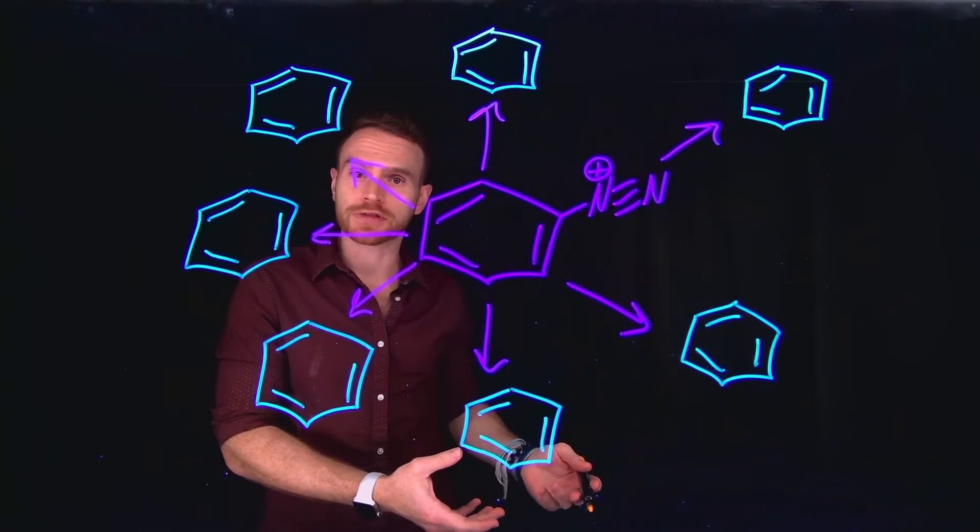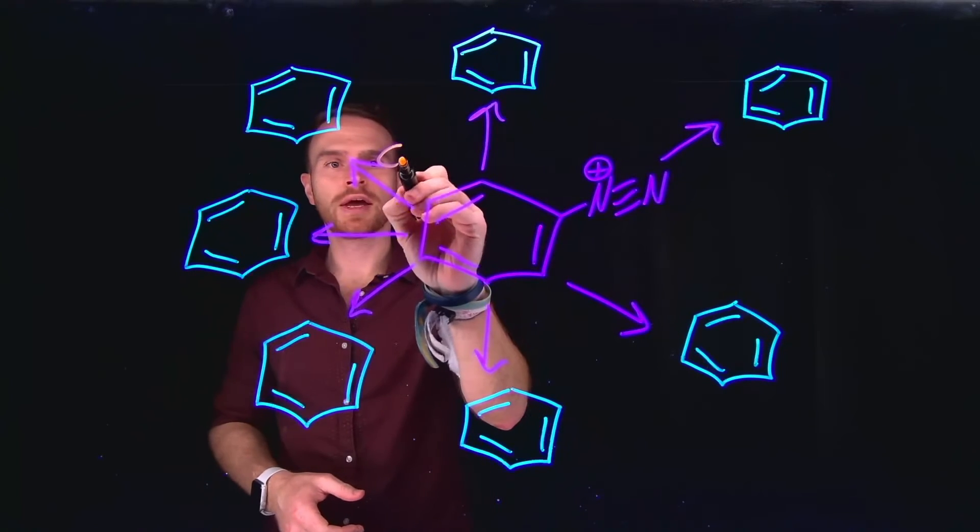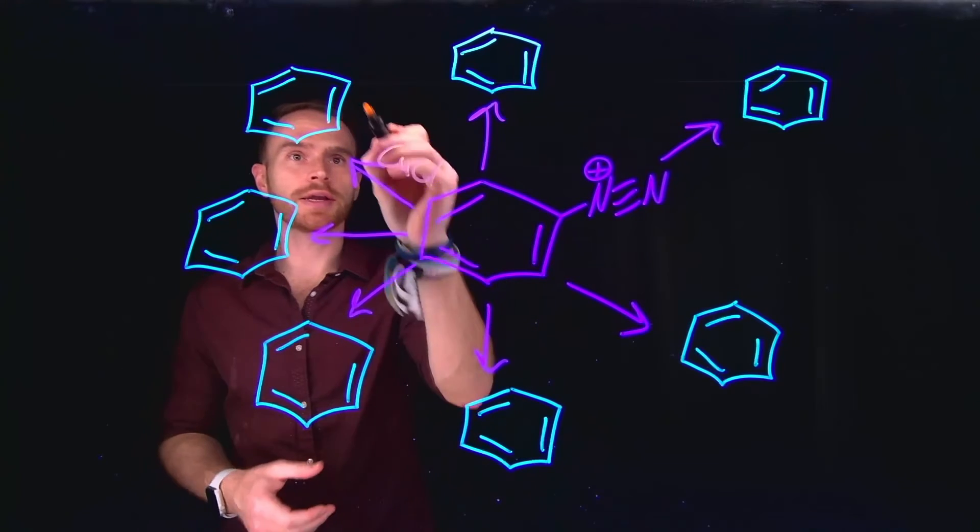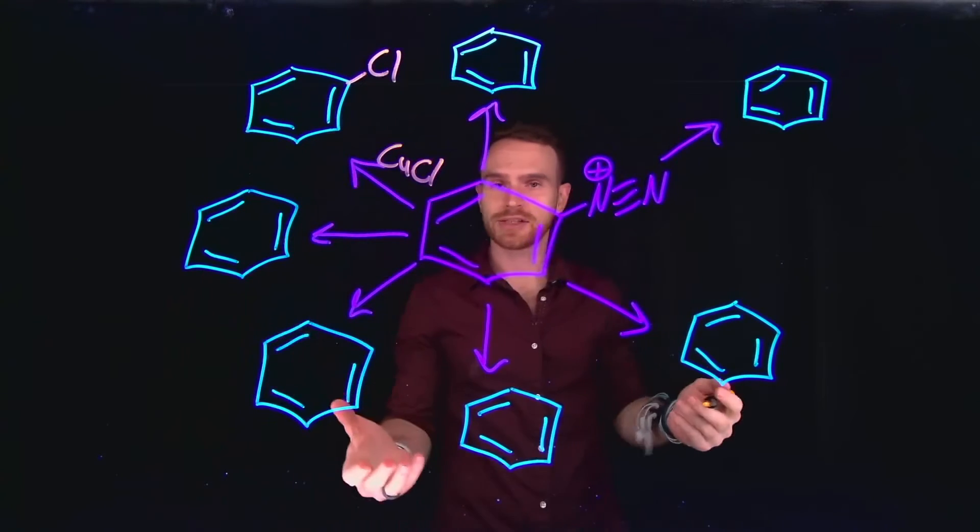One of the most popular reactions for this are called Sandmeyer reactions, where you take copper salts, like for example copper chloride, and you can exchange the substituent to a chloride from the diazonium salt.